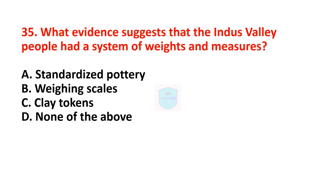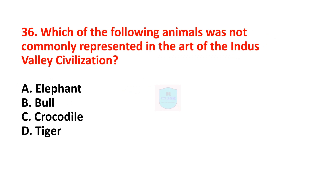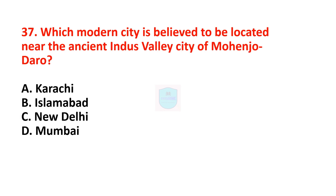Next question: what evidence suggests that the Indus Valley people had a system of weights and measures? Correct answer is weighing scales. Weighing scales found in the Indus Valley sites suggest the people had a system of weights and measures. Next question: which animal was not commonly represented in the art? Correct answer is crocodile. Elephant, bull, and tiger were commonly represented, but crocodile was not. Next question: which modern city is near ancient Mohenjo-daro? Correct answer is Karachi.